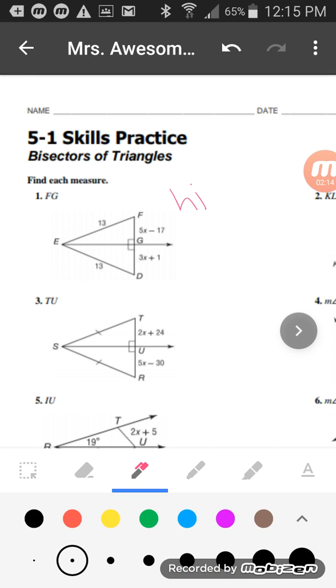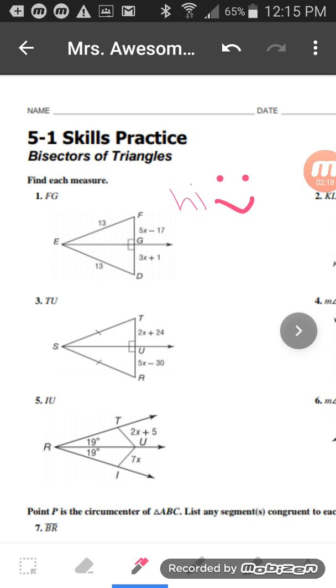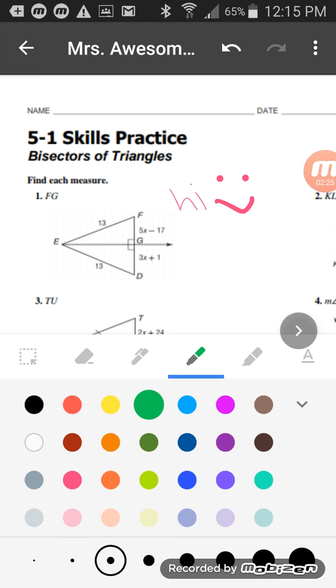I can also change the thickness of the pencil. I'm going to make it a little bit thicker and I'm going to put a smiley face. The next one is the marker tool. Same thing: hold and let go, click the arrow to pick your color. I'm going to pick this color right here and make a line.